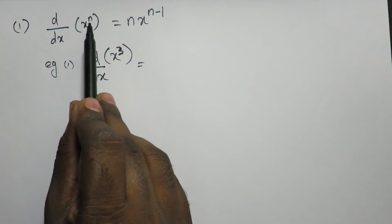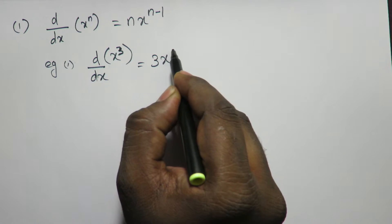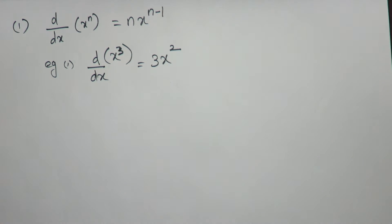So, what is n here? It is 3. So, 3 into x power 3 minus 1, which is 2. So, differentiation of x cube is 3x square.